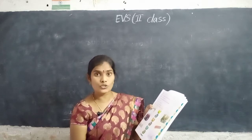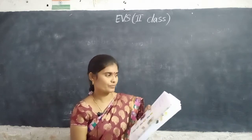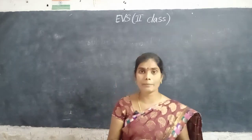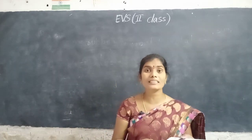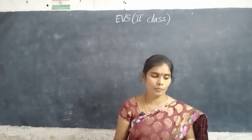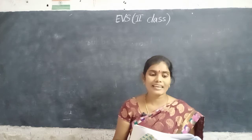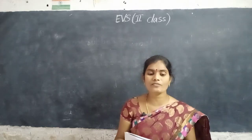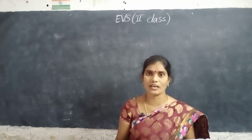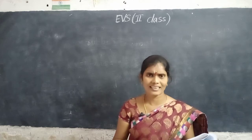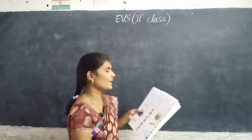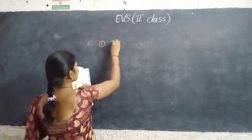I am giving two thoughts to you. Open your workbook at page number 33. First one: Glass is made up of sand, limestone and soda. Glass is made up of sand, limestone and soda. First one is true.